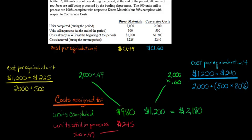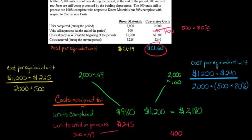Now the units still in process for conversion costs: there are 500, but they were only 80% complete with respect to conversion costs. So the equivalent units is really 400 — that's just 500 times 80%. So we're going to take 400 and multiply it by $0.60, the cost per equivalent unit, and that's going to be $240 of the conversion costs assigned to the units still in process.